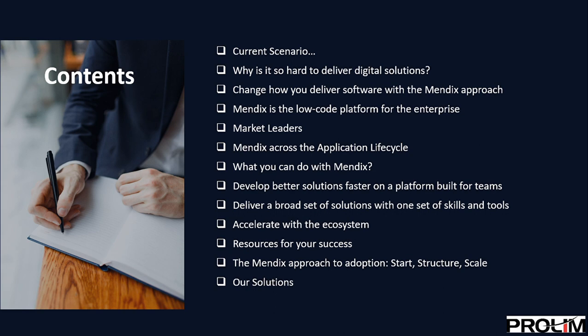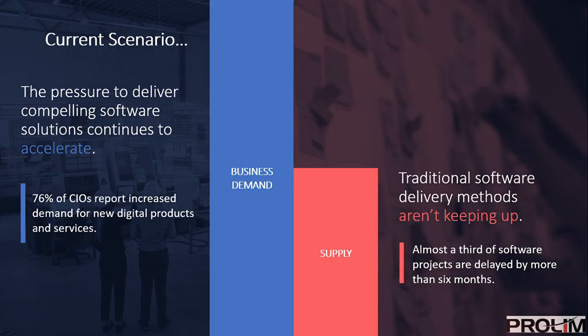The current scenario is that there is a high demand from businesses within enterprises to deliver digital products, and developers are not able to keep up with the demand. This is majorly because there is a supply and demand gap. Almost 76% of CIOs have said there is a constant demand for new digital products and services. According to surveys, most projects get delayed by at least six months.